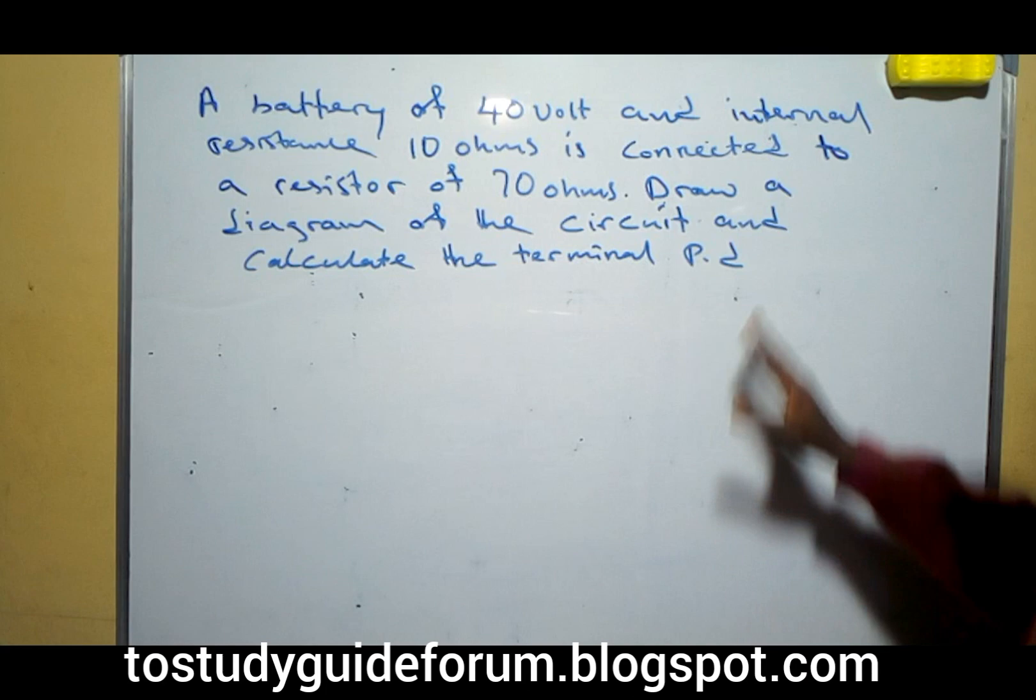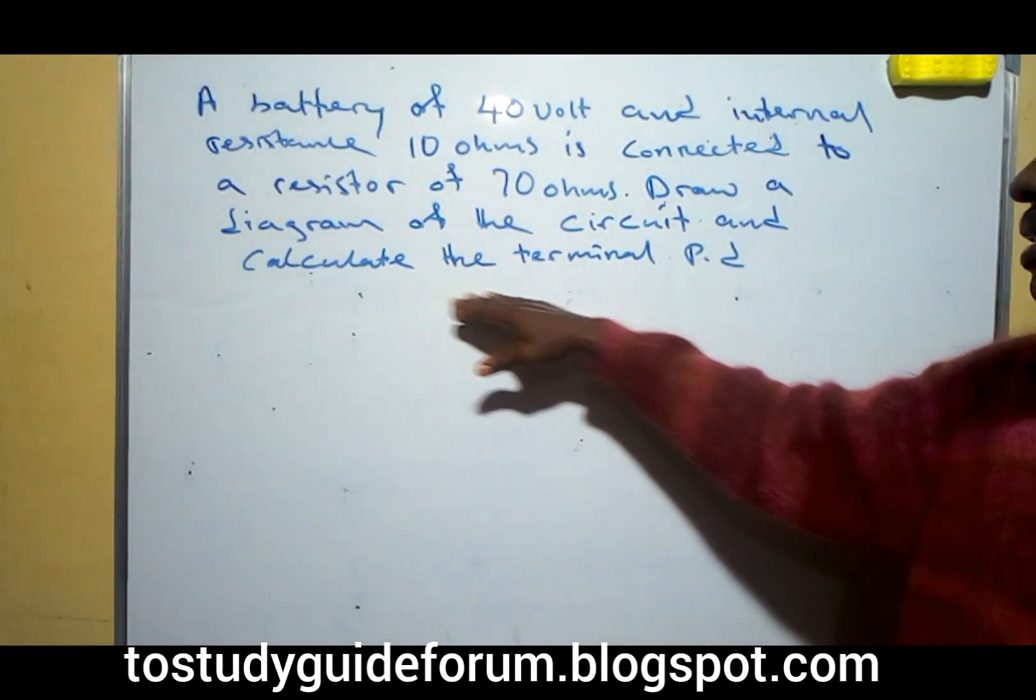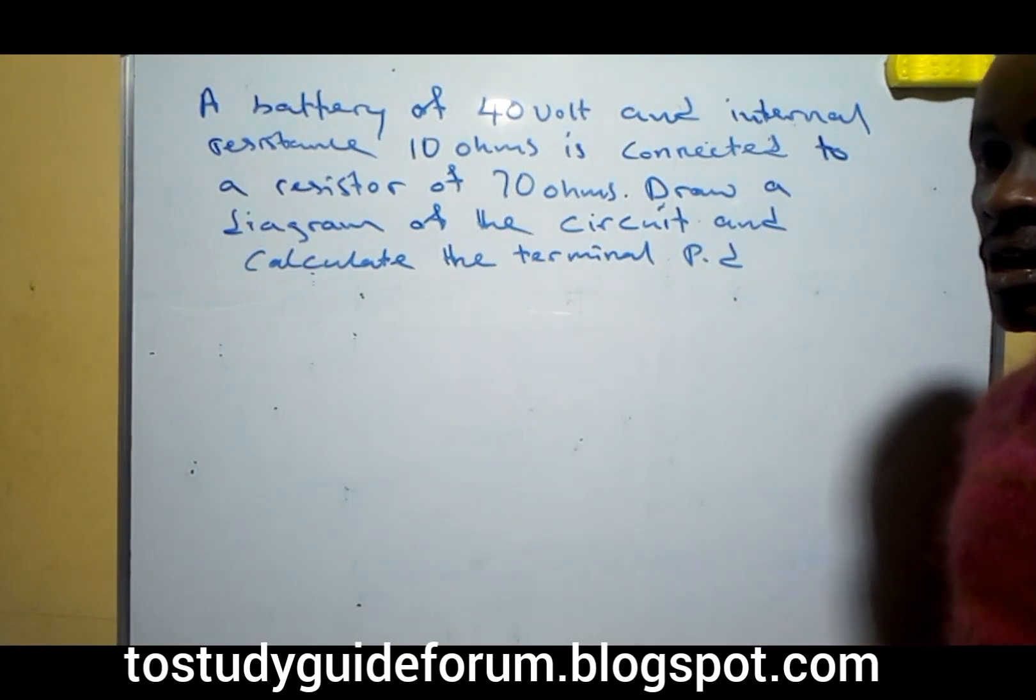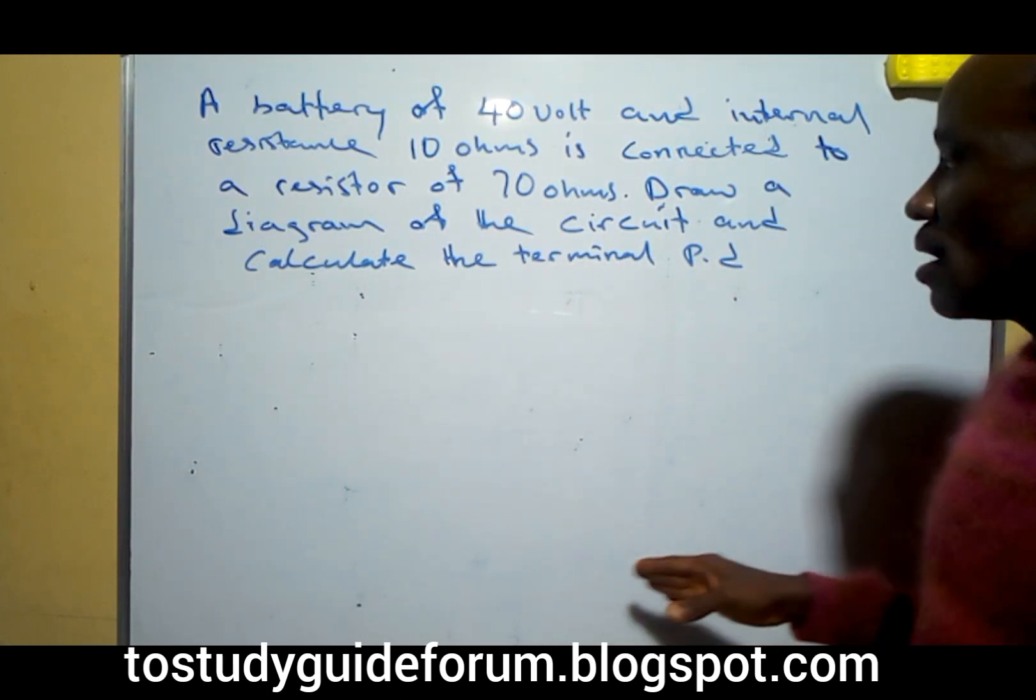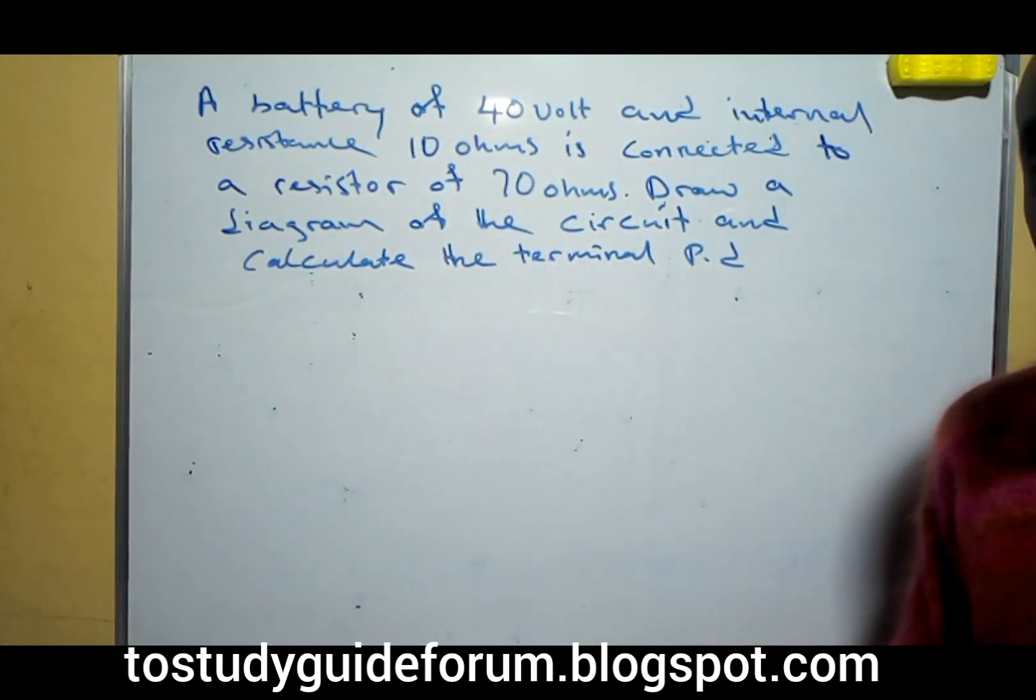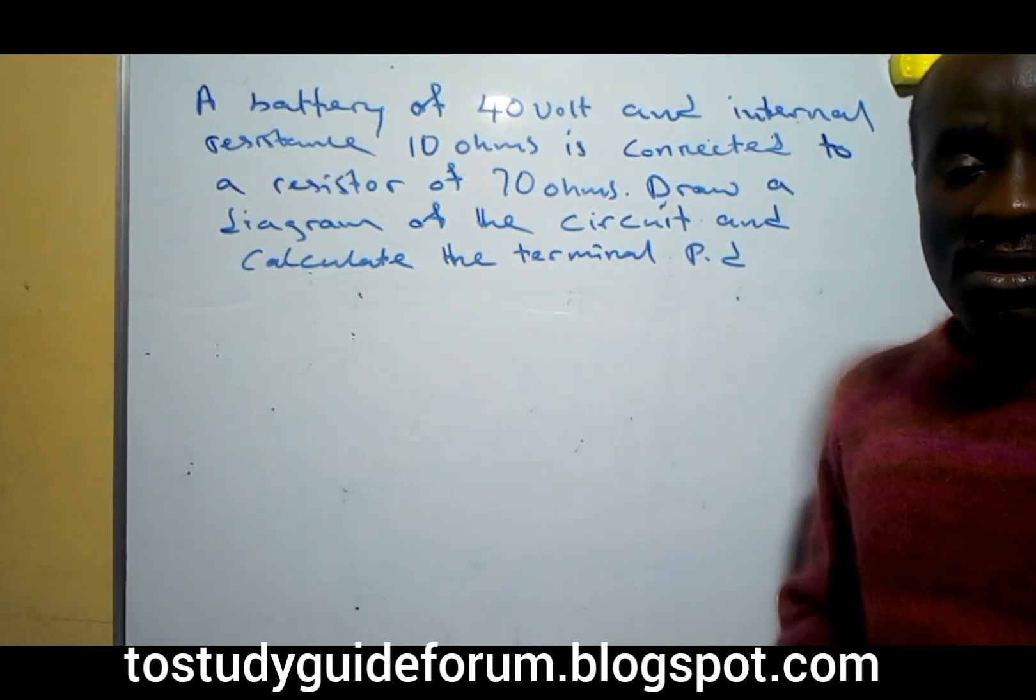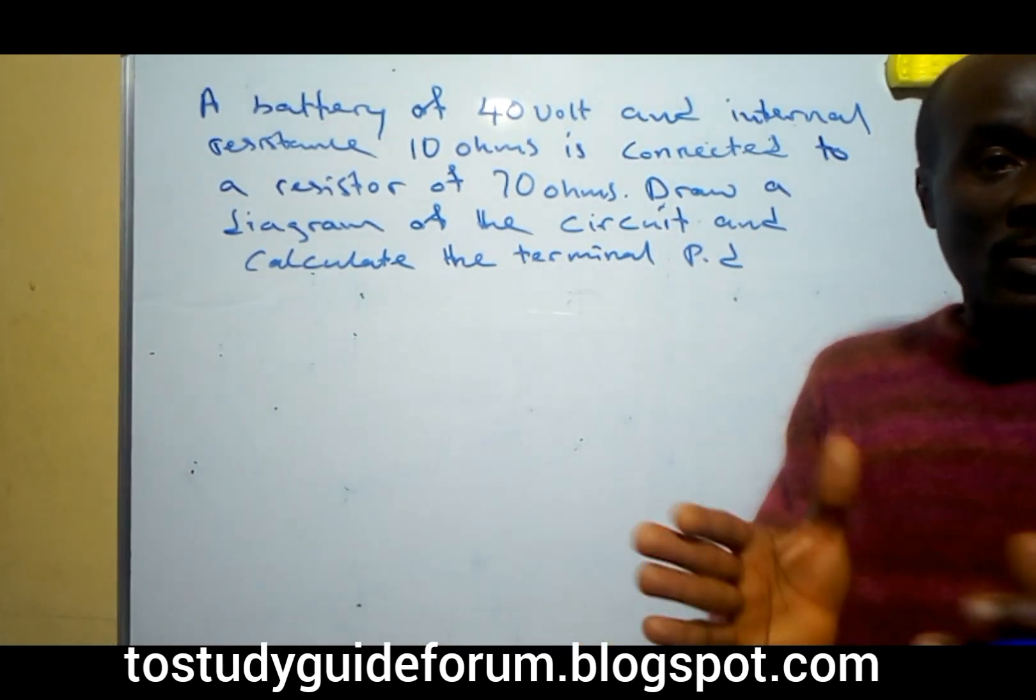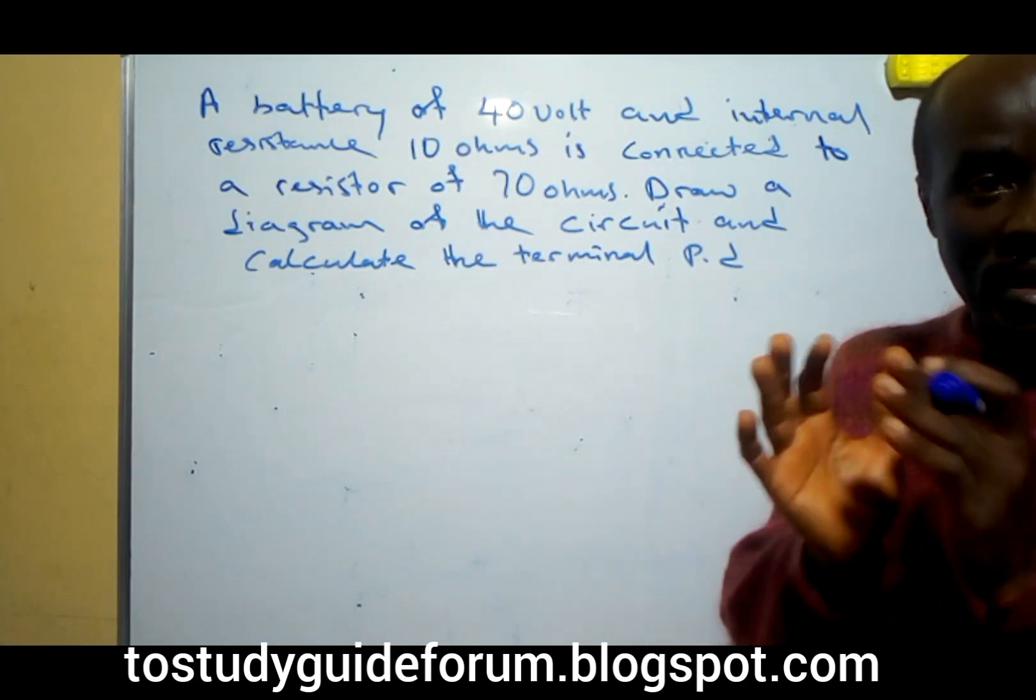Draw a diagram of the circuit and calculate the terminal PD. Now the terminal PD is the voltage or potential difference that is recorded outside the battery. Let me just put it that way, that is the PD across the terminals, that is, you know what we call EMF. EMF is the potential difference that we have inside the battery or the chemical cell.